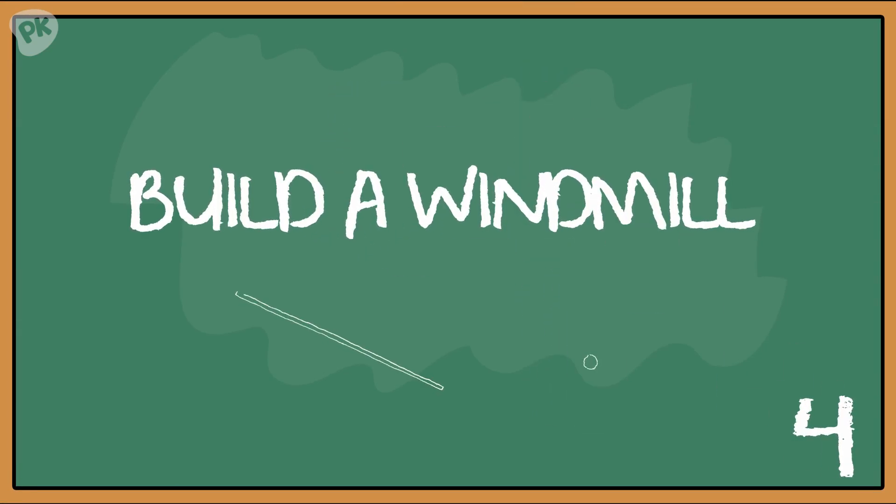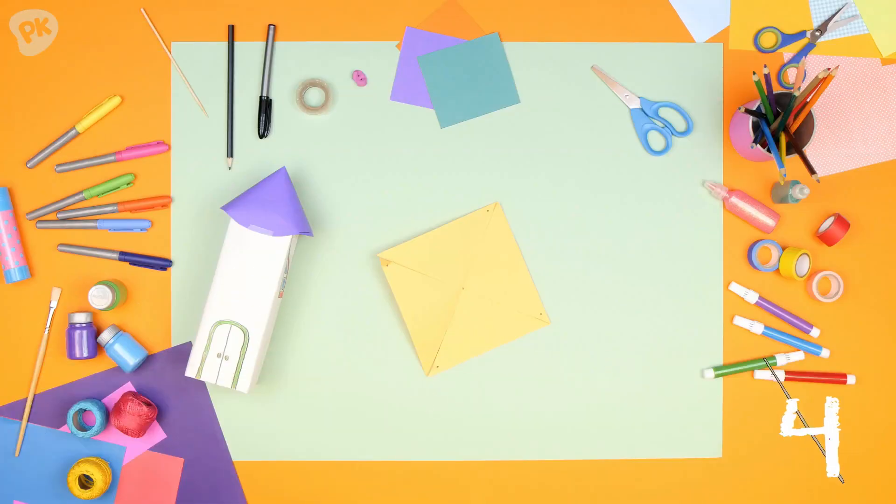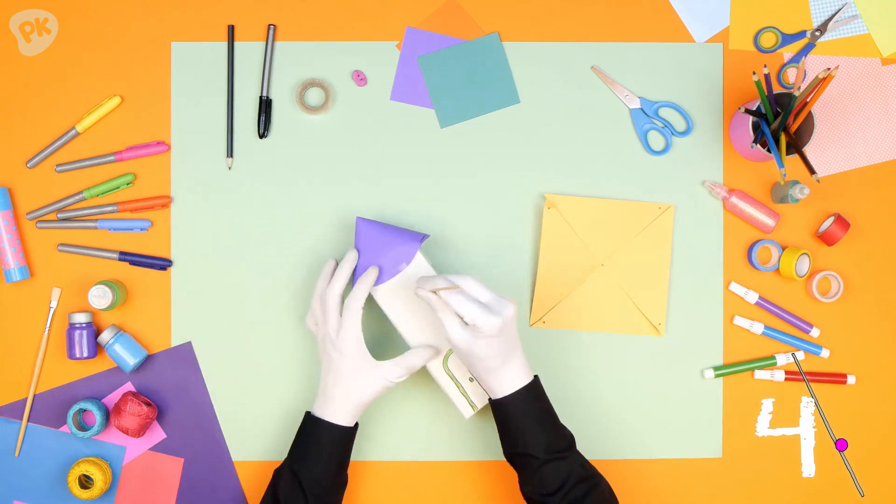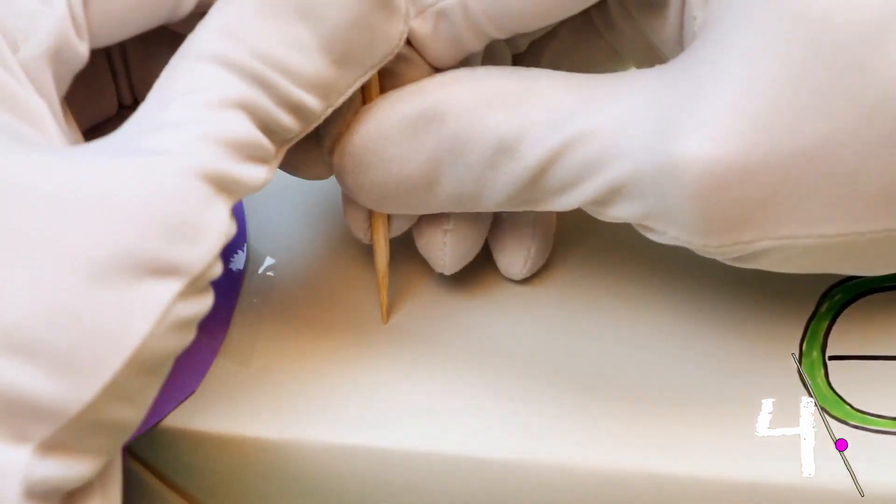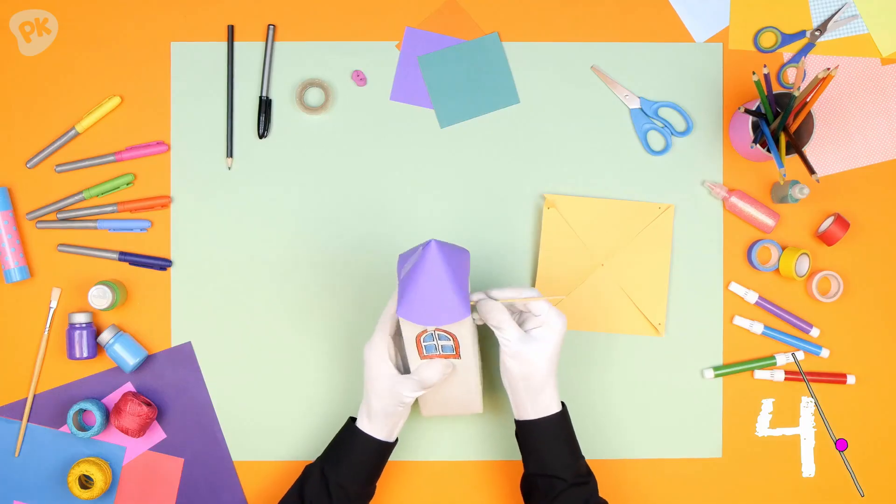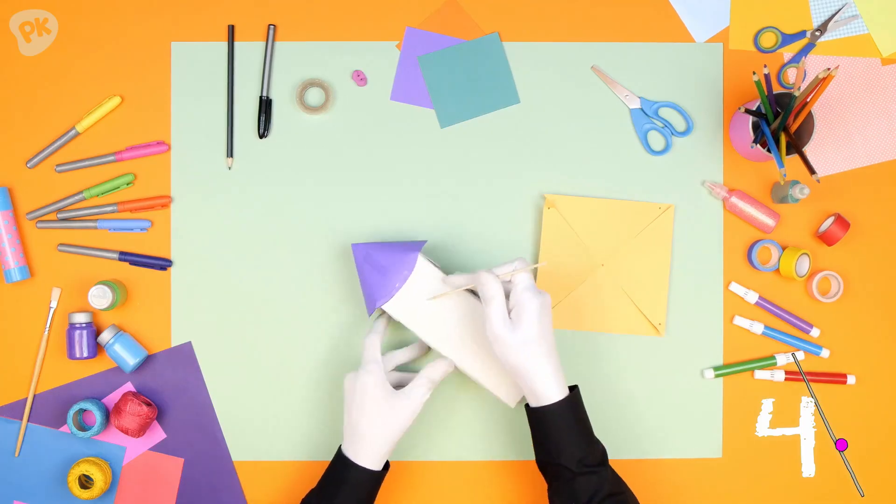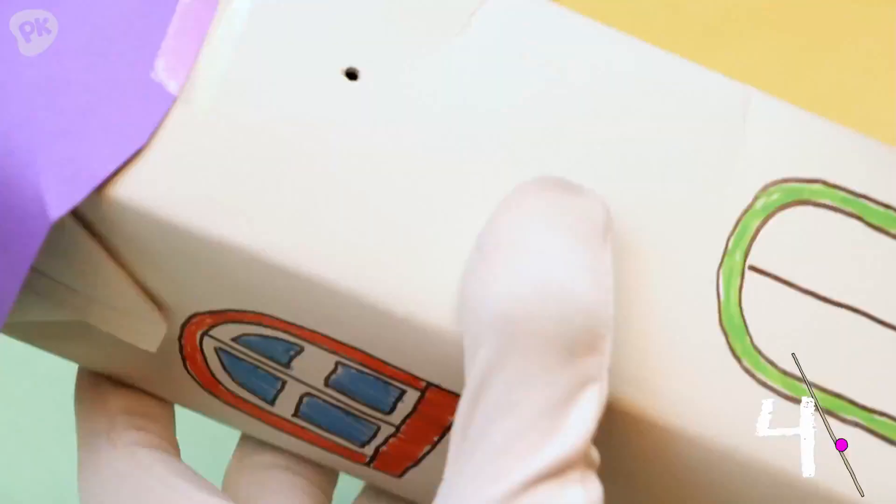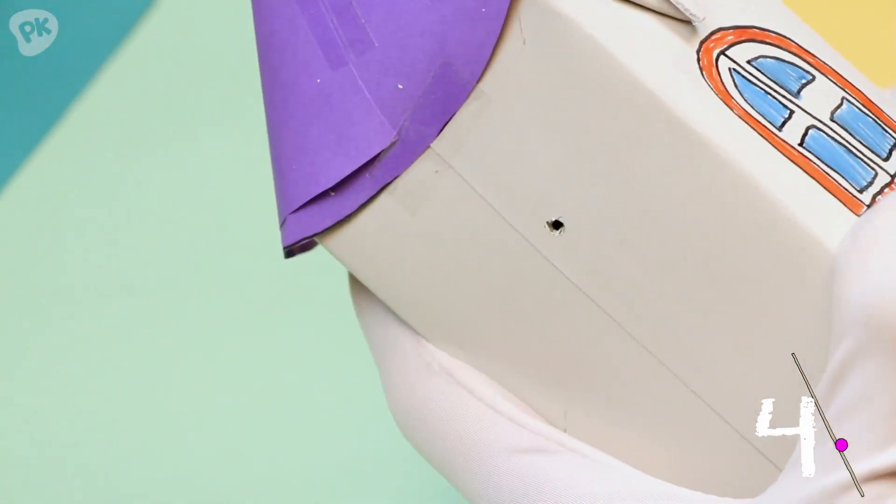Step 4. Let's finish building the windmill. Now, carefully get your pointy stick and make a hole in the box, just like this. If you need help, ask a grown-up. Make a hole on the front and on the back of the box.